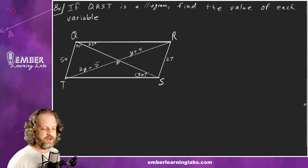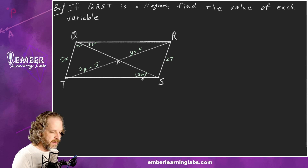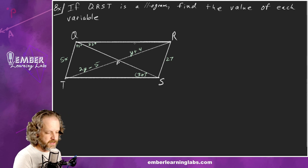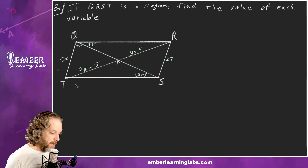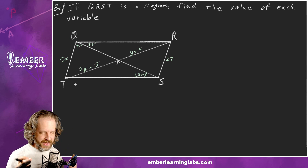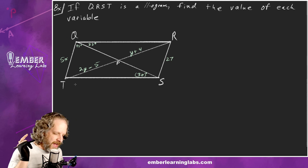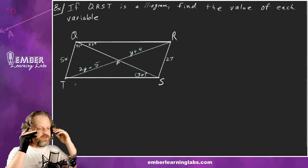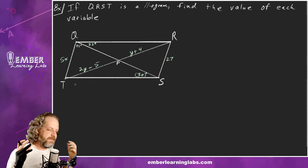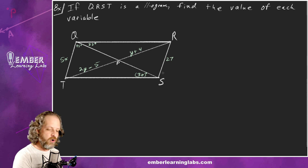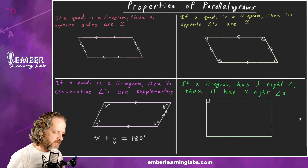Let's do an example. If QRST is a parallelogram, find the value of each variable. We've got several things going on — we'll do them in numerical order. For x, it lives on a side, so we go back and ask: which theorem relates to sides?